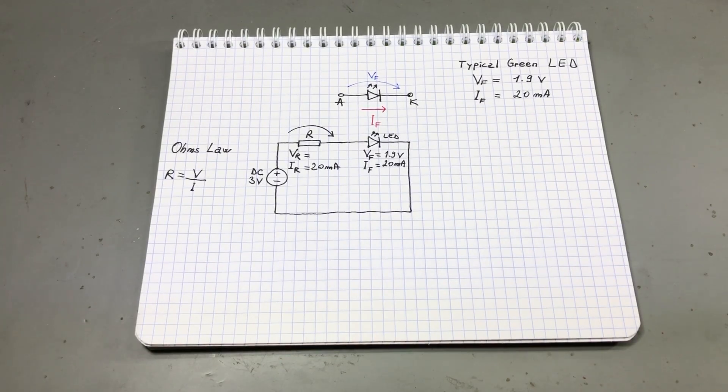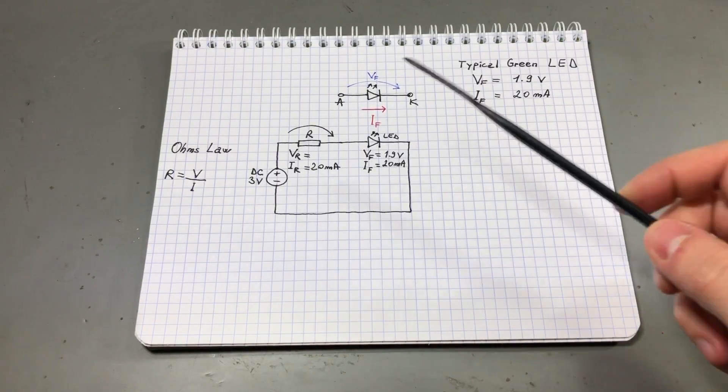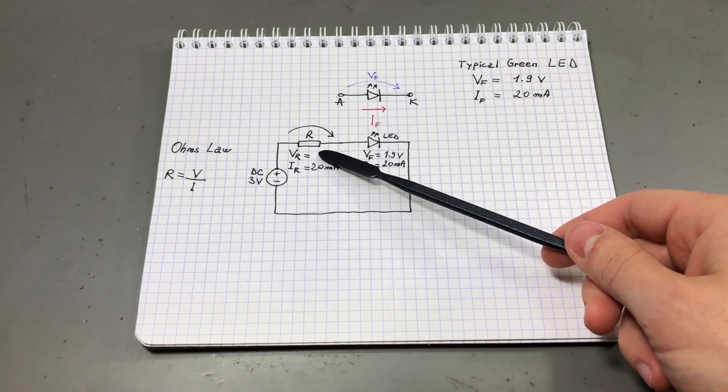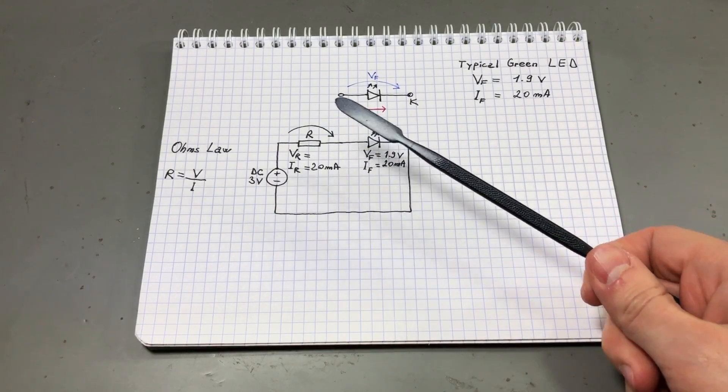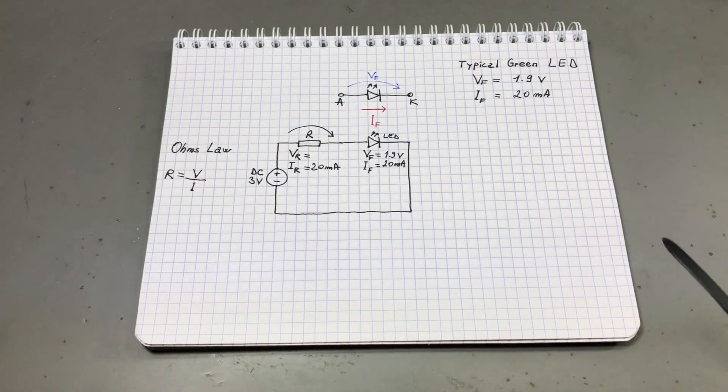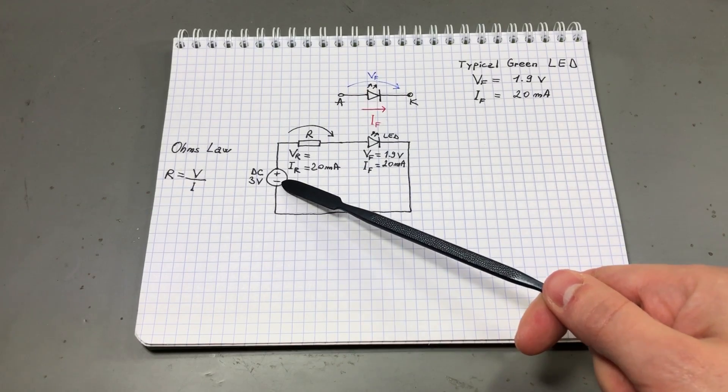So in order to limit the current, we can insert a resistor in our circuit in series with the LED. Now to calculate the value of this resistor, we need to use the two parameters mentioned before. Forward voltage and forward current as well as the supply voltage for our circuit.